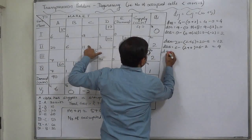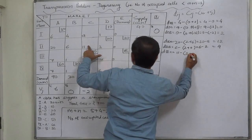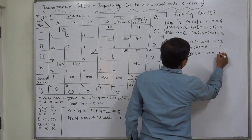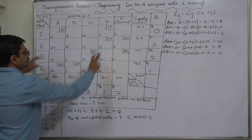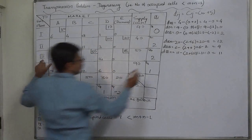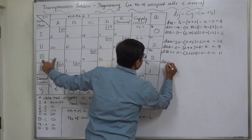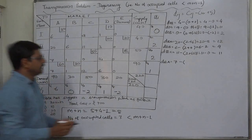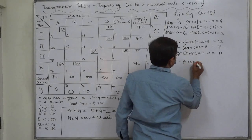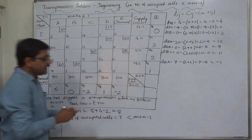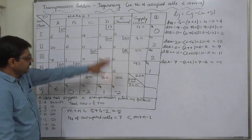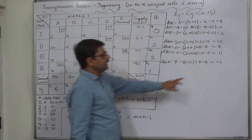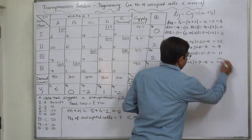For d(3d): c is 11 minus 2 plus (minus 2) = 11 minus 0 = 11, positive. Now for row 3, cell 3a: d(3a) = c is 7 minus ui 2 minus vj 6 = 7 minus 8 = minus 1. The dij value is negative, meaning this is not an optimal solution — if we make any allocation to this cell, the cost will decrease by rupee 1. This is the interpretation of a negative dij value.